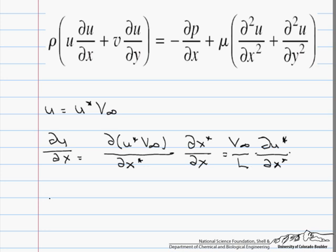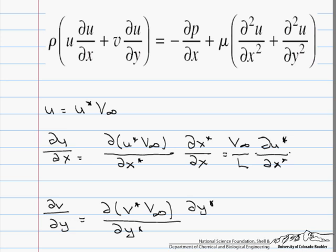And we do the exact same thing for dv/dy. And because we are using the same references, what you will see is this comes out to be the exact same, v∞/L dv*/dy*. Also, when we want to look at v, we go up to our definition of what v* is, and we know that v can just be rewritten as v* times v∞.